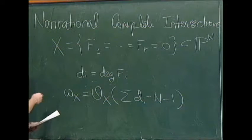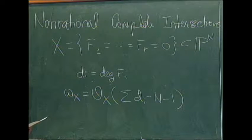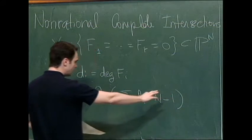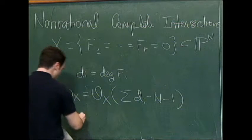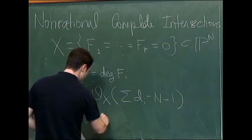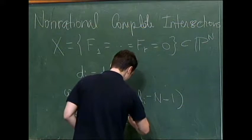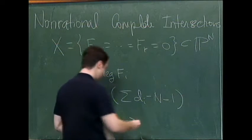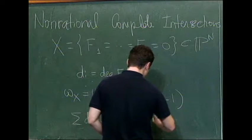Now, the number of global sections of this is a birational invariant. It's the geometric genus. So if this sum is bigger than this negative number, there are such global sections. And so if you have such global sections, the complete intersection is not rational, because the number of global sections is a birational invariant. So if the sum of the di is at least n plus 1, X is not rational.